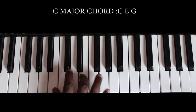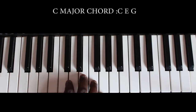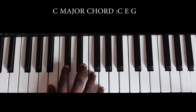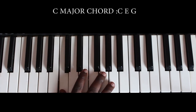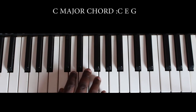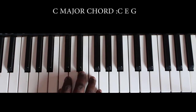C, E and G. Our C can be found by — in front of every two black keys, there's a C. That is the white key in front of these two black keys. Here's our C.